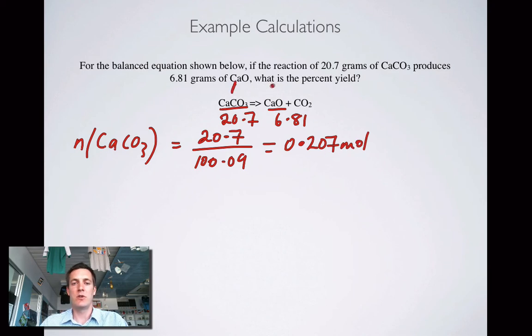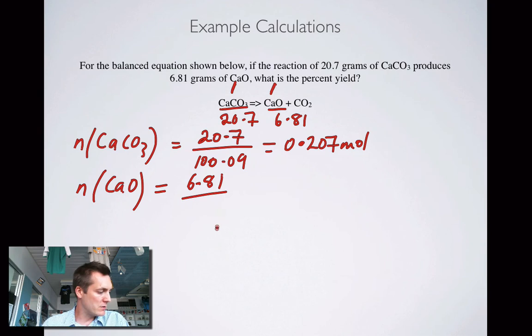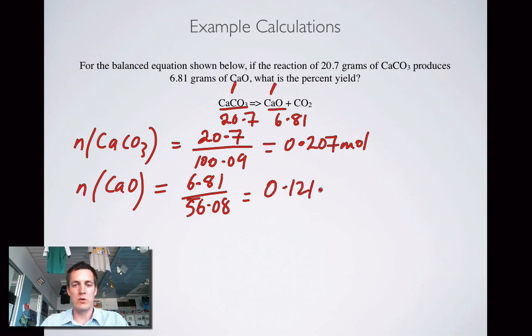Why am I doing this? Because I'm trying to compare this mole ratio to the actual mole ratio which is one to one. So number of moles of calcium oxide equals 6.81 over, what's the molar mass of calcium oxide, 56.08, and that equals 0.121 moles.